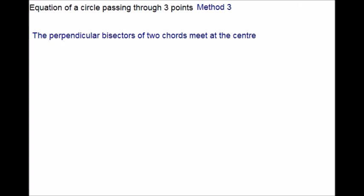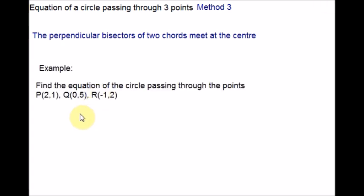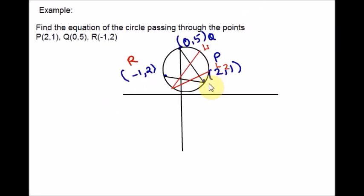Let me take a very simple question as an example. We are supposed to find the equation of a circle that passes through three given points P, Q, and R. Here is the diagram to illustrate this question. Let L1 and L2 be the perpendicular bisectors for chord PQ and chord QR.